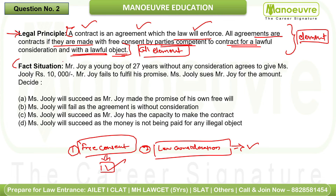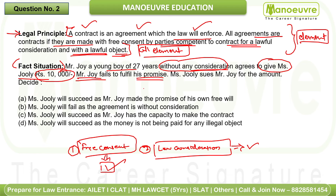Factual situation: Mr. Joy, a young boy of 27 years, without any consideration agrees to give Mrs. Julie rupees 10,000. Mr. Joy then fails to fulfill his promise. Mrs. Julie sues Mr. Joy for the amount. The key issue here is that Joy promised to give money without any consideration — like a donation — so no contract is formed, because consideration is required for a valid contract.